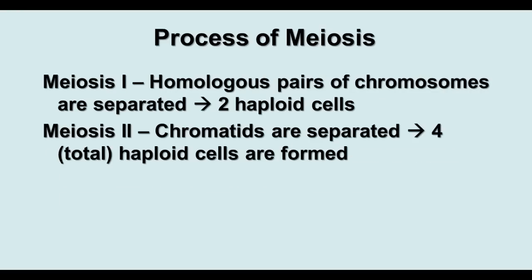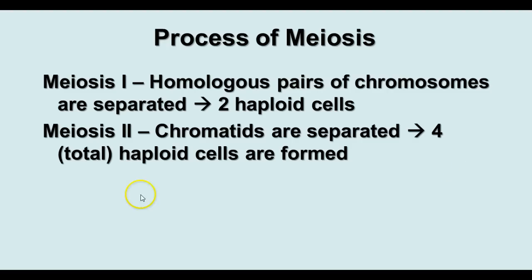The process of meiosis involves two divisions, called meiosis I and meiosis II. The stages are similar to and named the same as the stages of mitosis, but there are two divisions with only one replication. In meiosis I, homologous pairs of chromosomes are separated and you end up with two haploid cells, each with half the number of chromosomes, but the chromosomes are still doubled because sister chromatids have not separated. In meiosis II, the chromatids are separated and you have four total haploid cells.